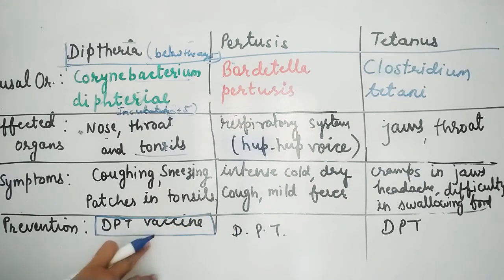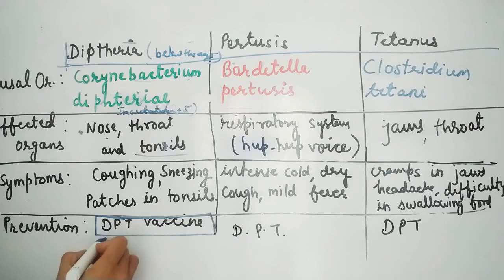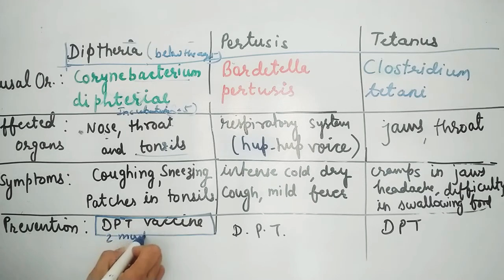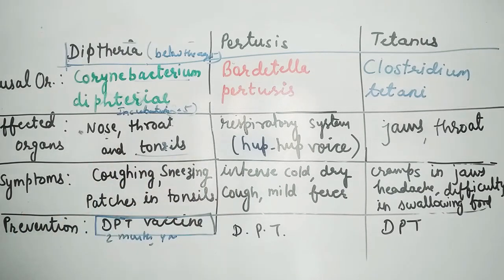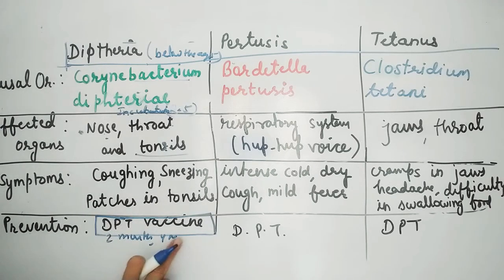This vaccine should be administered at the age of 2 months, 4 months, and 6 months — 4 doses of the DPT vaccine should be administered.